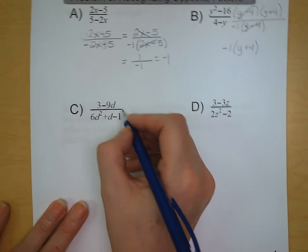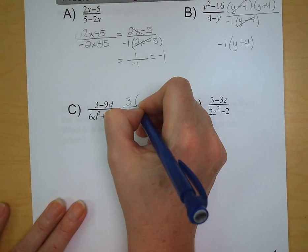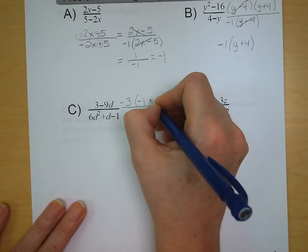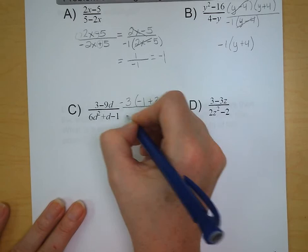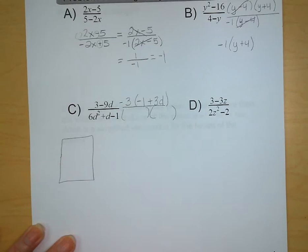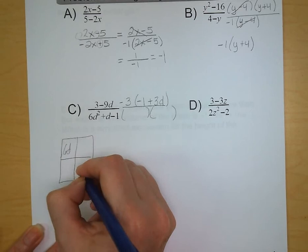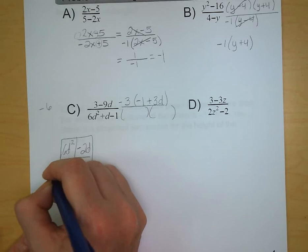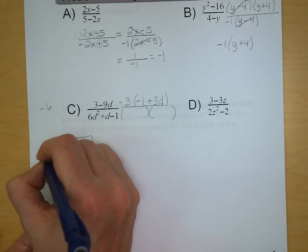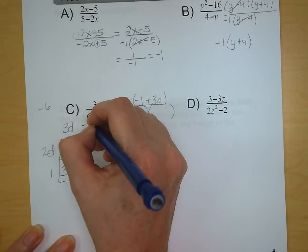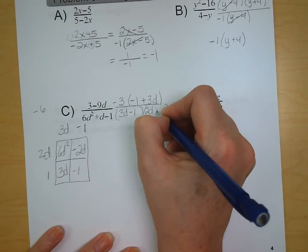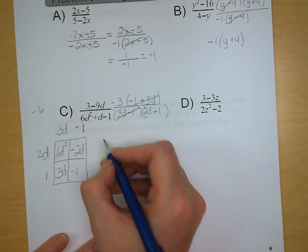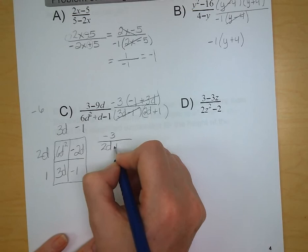Letter C: we can factor out a negative 3 from the numerator, leaving us with 3 times the quantity negative 1 plus d. For the denominator, we're looking for factors of negative 6 that add up to positive 1 — those are positive 3 and negative 2. Factoring gives us 3d minus 1 and 2d plus 1 as our two factors. The 3d minus 1 terms cancel — even though written in a different order, the signs are the same — and we're left with negative 3 over 2d plus 1.